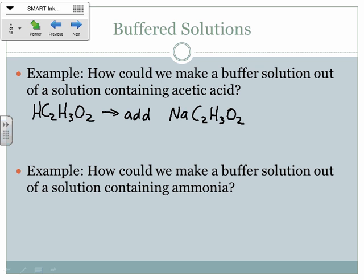How could we make a buffer out of a solution containing ammonia? Ammonia is NH₃. When ammonia reacts with water, because nitrogen has a lone pair in its Lewis structure, it acts as a weak base — it can pull a hydrogen off of water to make NH₄⁺ plus OH⁻. So the conjugate acid is NH₄⁺. A good buffer containing ammonia will also have a significant amount of NH₄⁺.